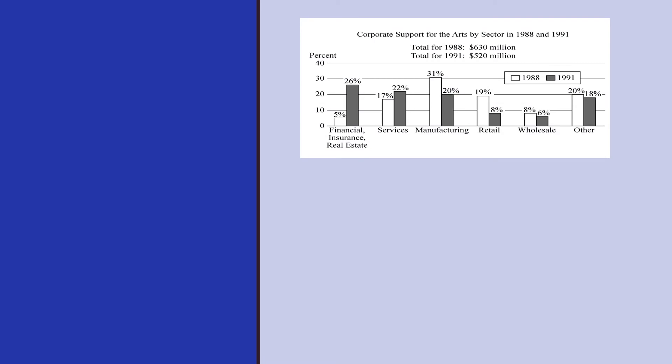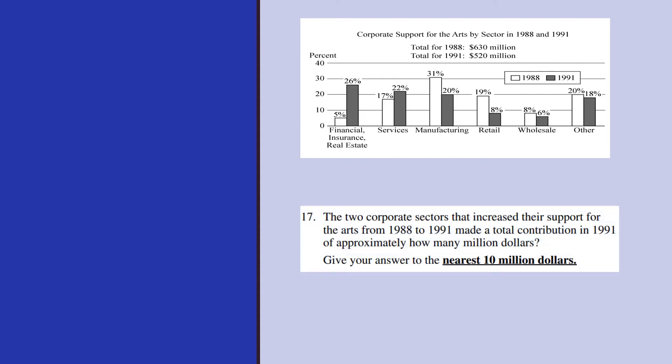We have a diagram given, a bar graph given here. Now using the bar graph, we have to answer this question. The question is, the two corporate sectors that increased their support for arts from 1988 to 1991 made a total contribution in 1991 of approximately how many million dollars? And we have to give the answer nearest to 10 million dollars. So we have to find the total amount here.